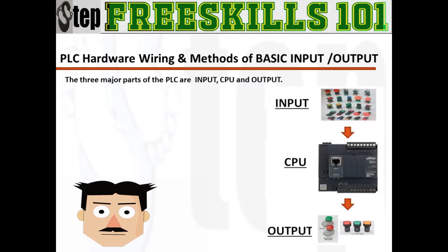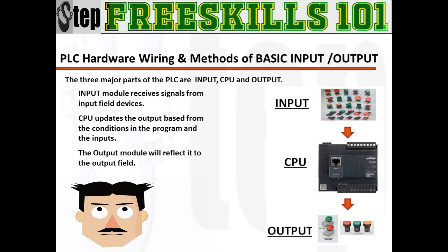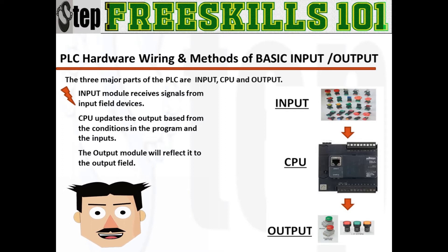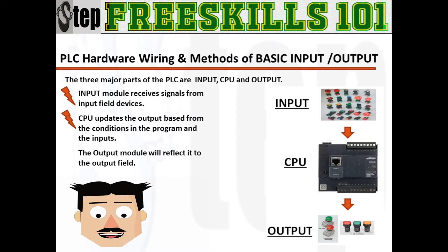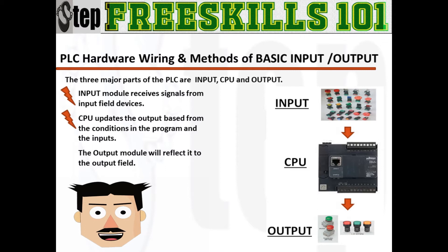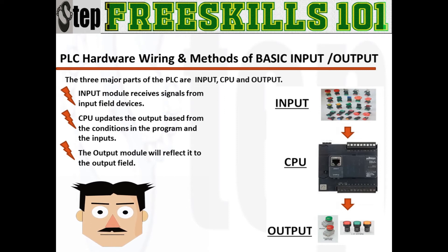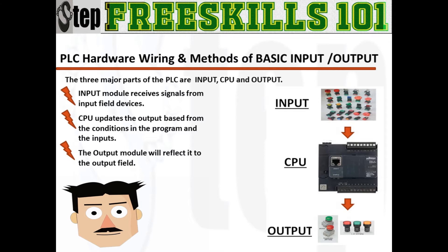Recalling from Part 1, we know that the three major elements of the PLC are the input, the CPU, and the output. An input module detects the signal status of the input field devices. A central processing unit handles signals from the input module and updates the status of the output module based on its program. An output module controls devices such as relays, motor starters, lights, and et cetera.